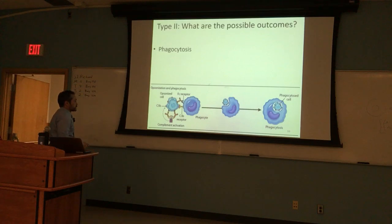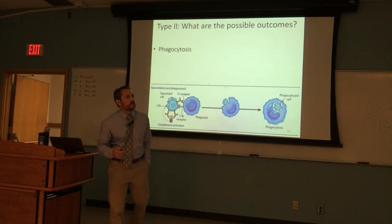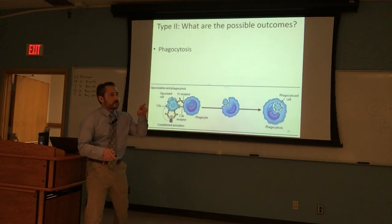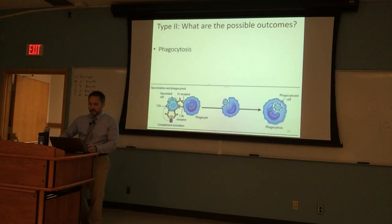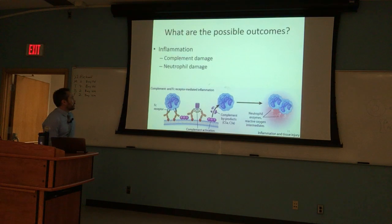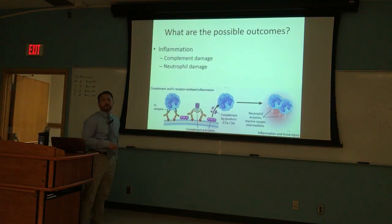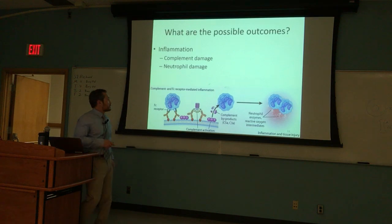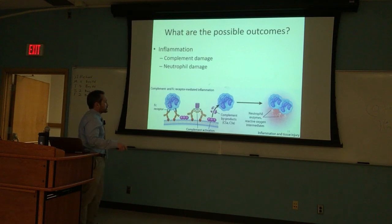What are some of the outcomes of type 2? When the antibody binds to the antigen, you can have a phagocytosis response or an inflammatory response. The inflammatory response is what we see with Aschoff bodies in myocardial tissue — neutrophil recruitment, complement recruitment, both causing damage via reactive oxygen species into the surrounding tissue, causing that tissue trauma.